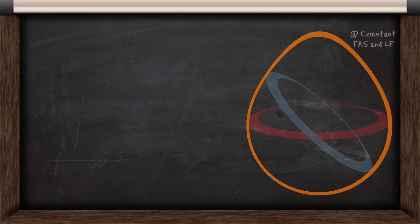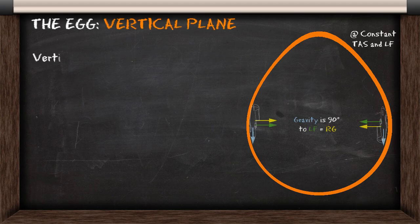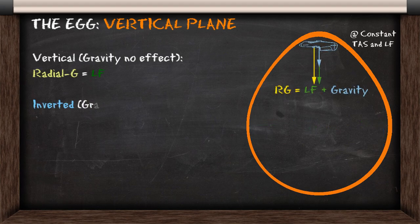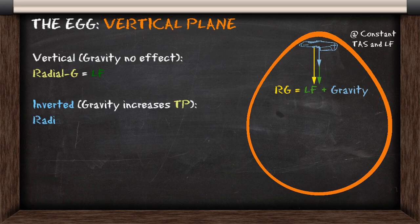Now we'll look at how gravity affects the vertical plane. If you are vertical, gravity has no effect, and radial G is the same as the load factor. If you're inverted, however, gravity assists your turn performance, so radial G will be greater than the load factor. This will give you a faster turn rate and a smaller turn radius.